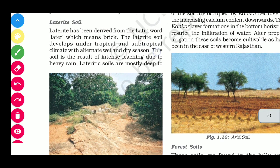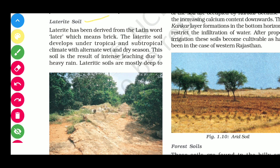The next type is laterite soil. Laterite has been derived from the Latin word 'later', which means brick. Laterite soil develops under tropical and subtropical climates with alternate wet and dry seasons.